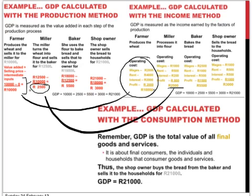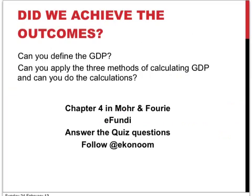In the third instance, you can only look at the value of the final goods and services — that makes for 21,000 rands at which the shop owner sold the bread to the households. Remember, in a closed circular flow, the production, income, and spending methods should yield the same answer. So, did we achieve the outcomes of this section? Can you define the GDP? Can you apply the three methods of calculating the value of GDP and do the calculations? There are more resources available on your Fundi and you can answer the quiz questions. Follow EconomTF4 on Twitter. Thank you.